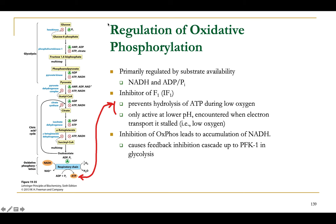Zooming out further, the ATP synthase, the respiratory chain, and more generally the oxidative phosphorylation system are embedded in the context of whole-cell metabolism. Their major role in providing energy to the cell must be coordinated with other cellular processes to maintain energy homeostasis. There must be ways in which the oxidative phosphorylation system is regulated at different levels to remain in sync with the cell's energy needs.